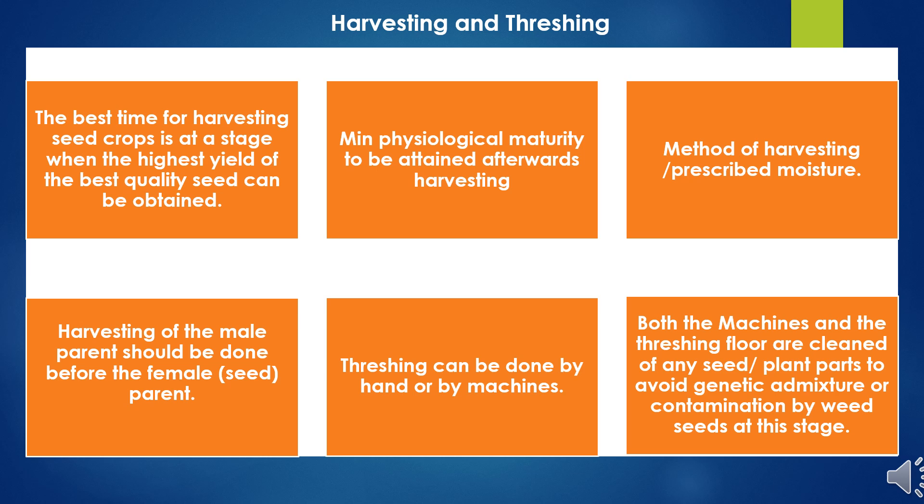High moisture leads to germination problems, fungal attacks, or loss of vigor and viability, so moisture percentage must be followed as per recommended prescription. Male parent harvesting should be done first, prior to female harvesting. After male harvest, the field should be thoroughly checked so there are no leftover male plants, and after thorough roguing and inspection, female harvesting is permitted. After harvest, threshing can be done by hand or machine, and both machinery and threshing floor should be cleaned to prevent genetic and physical contamination at the processing and cleaning stage.